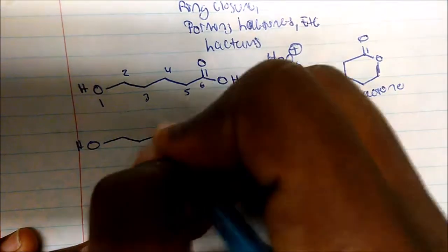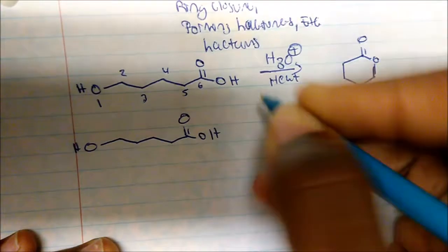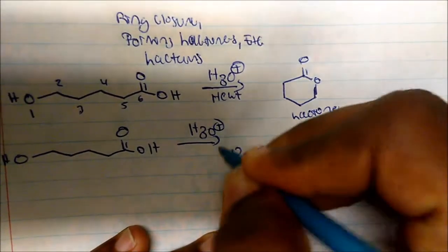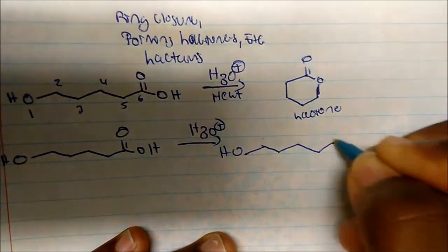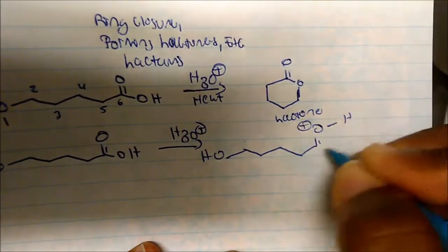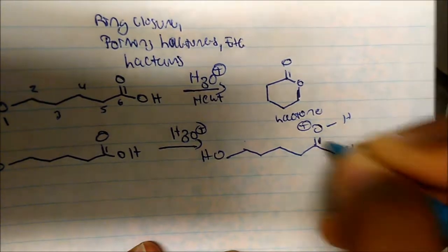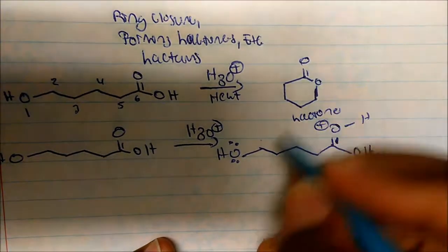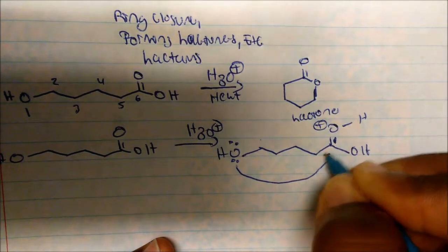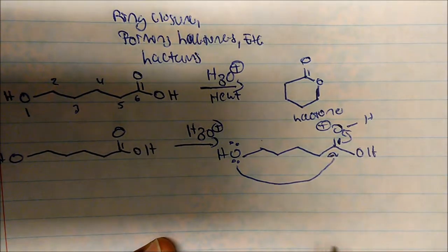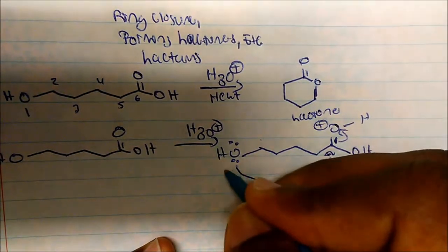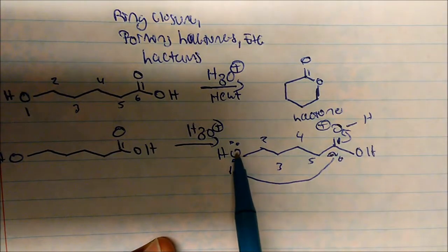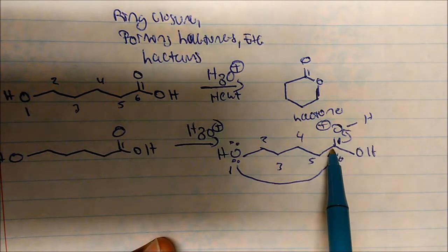Remember, if we throw a carbonyl in acid it's going to gain protonation — the oxygen gains a proton and becomes positively charged. The lone pairs on the alcohol are very nucleophilic, so it will attack and form a diol on that carbon. Looking at the ring: one, two, three, four, five, six — it's a six-membered ring with an oxygen bonded to the carbon that now contains two alcohols.